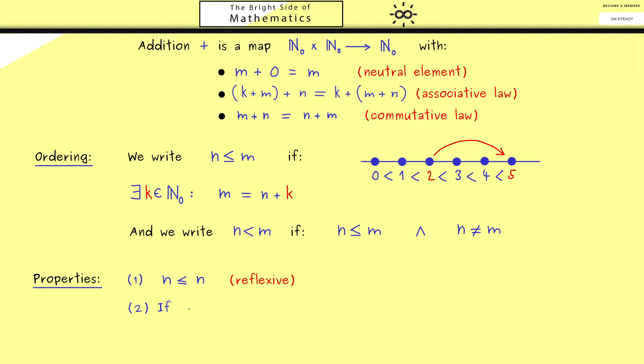Now the second property should tell you what happens when we have the order in both directions. So when we have that n is less or equal than m but also greater or equal written as that. Then the only possibility should be they are indeed the same. This property is usually called anti-symmetric. Which just means if we have two different elements only one of the two orders can happen.